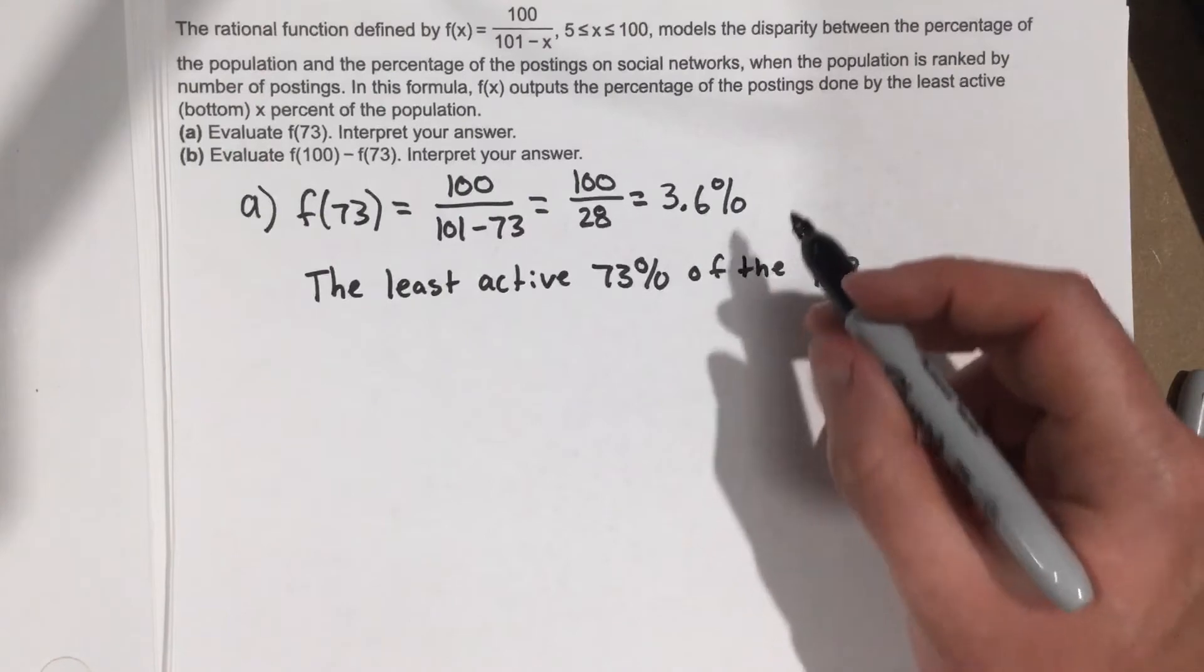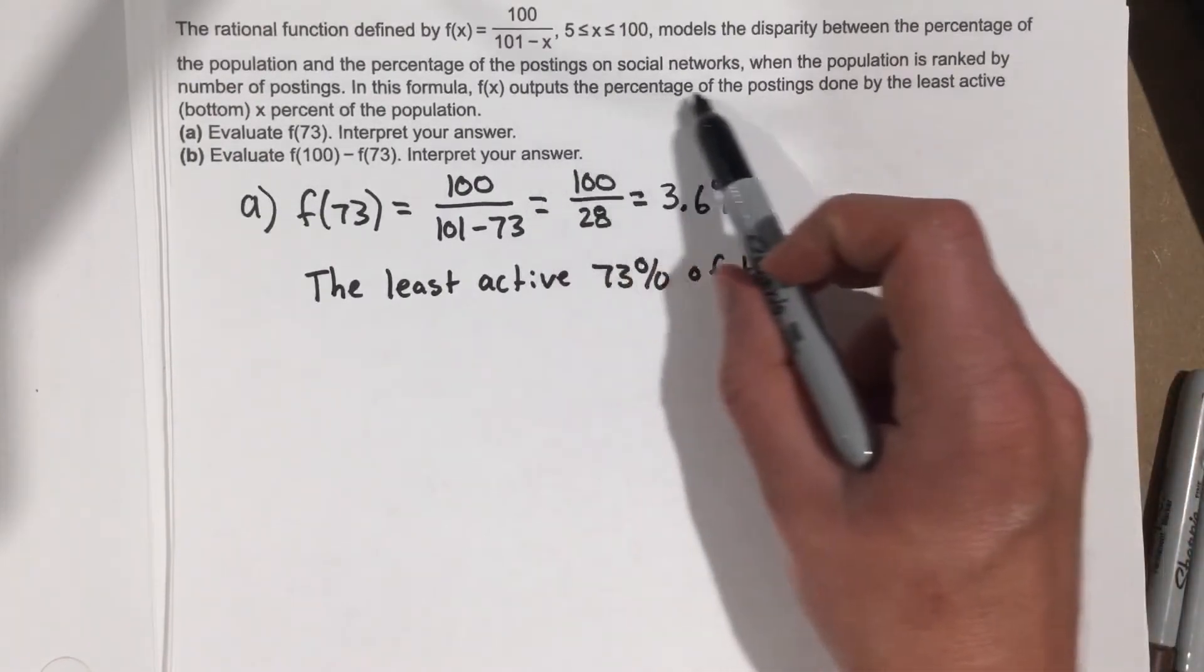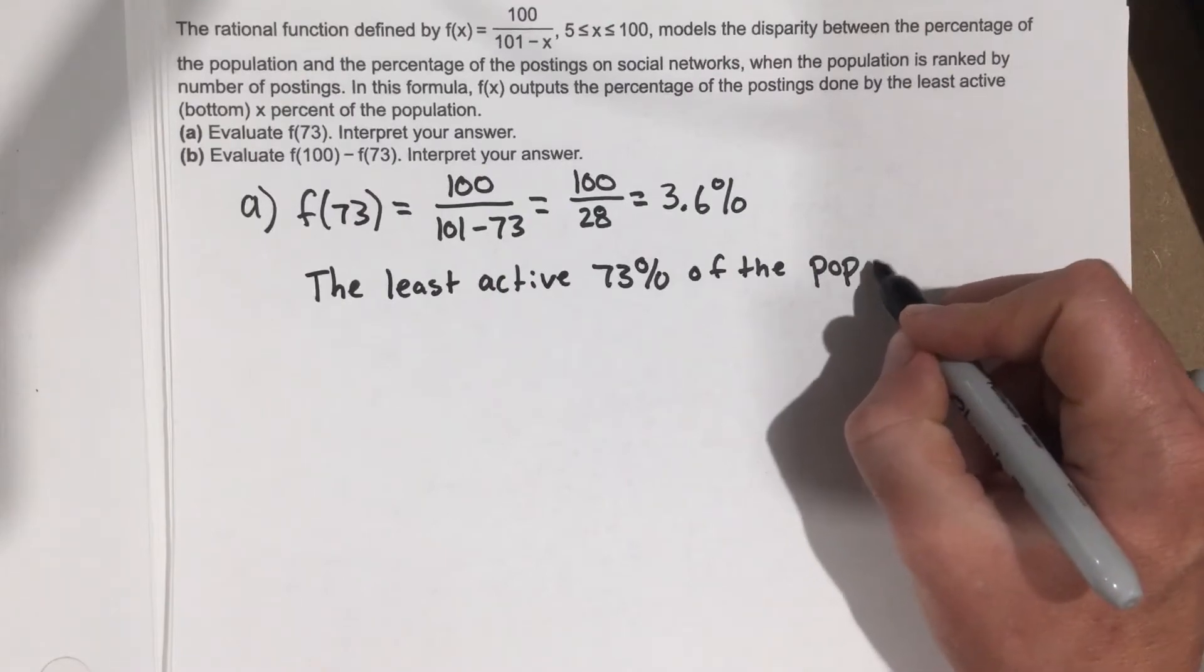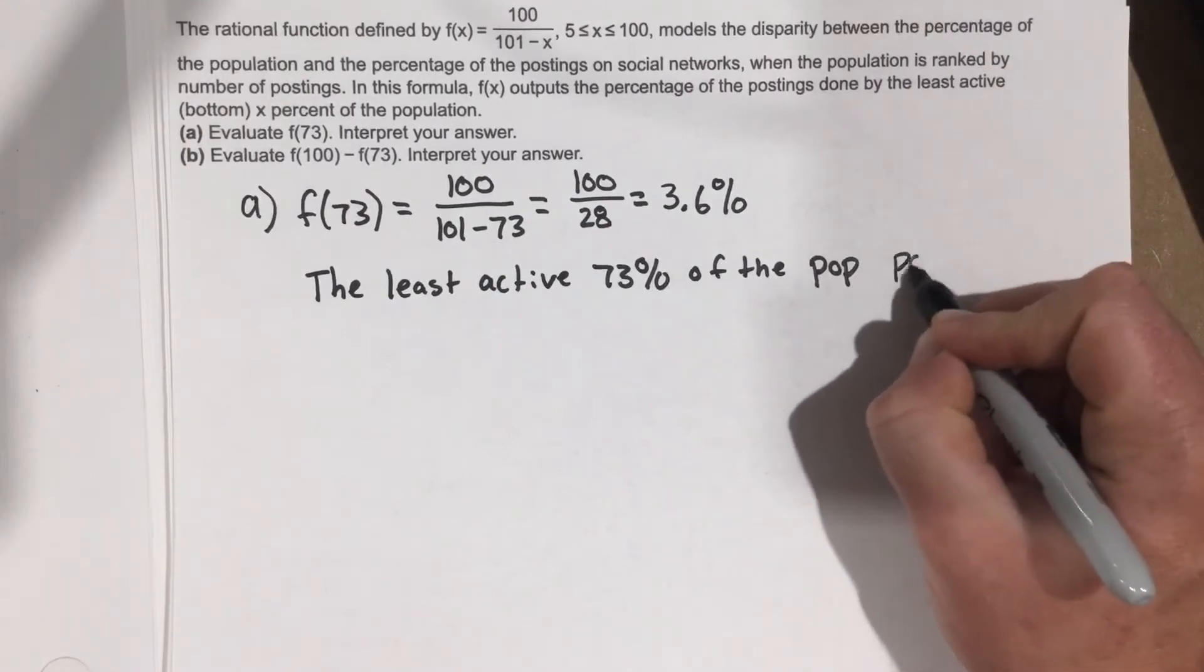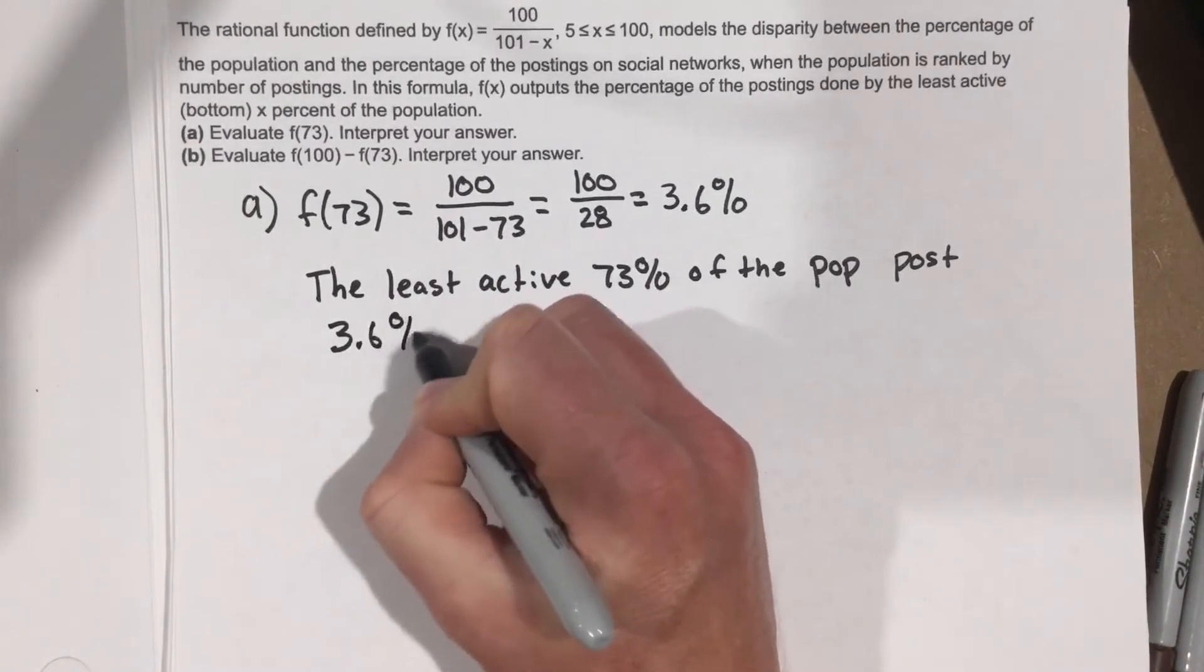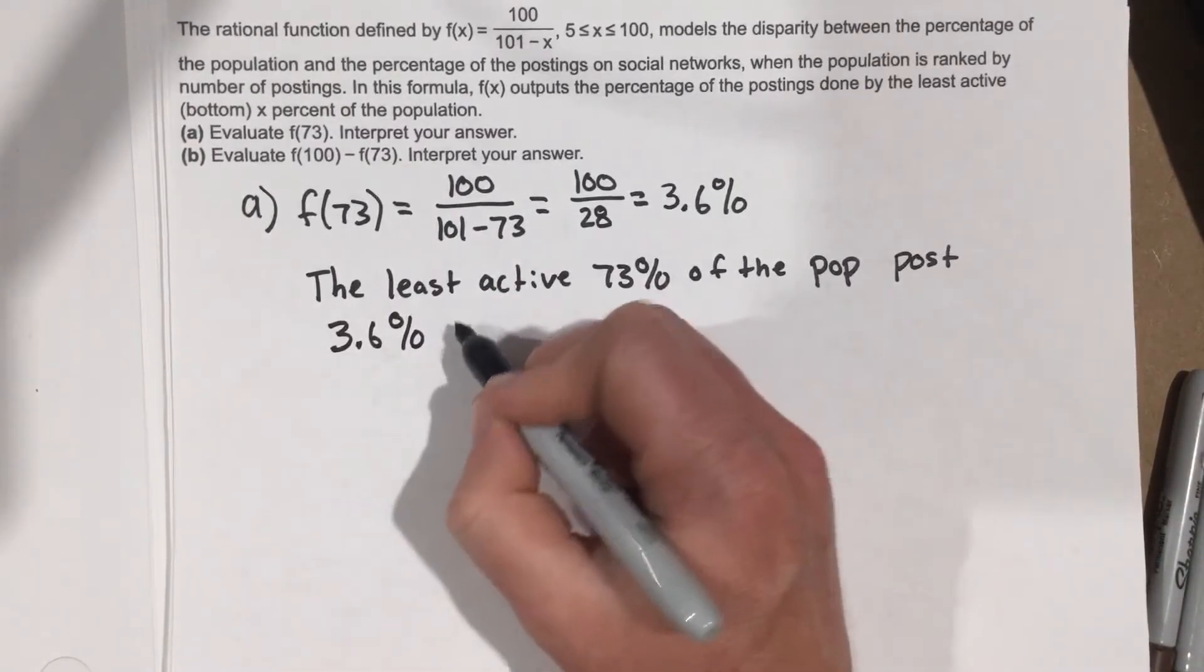f(x) outputs the percentage of postings done. Population post 3.6% of all postings.